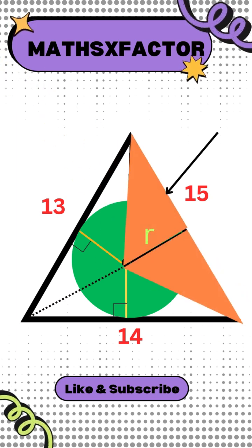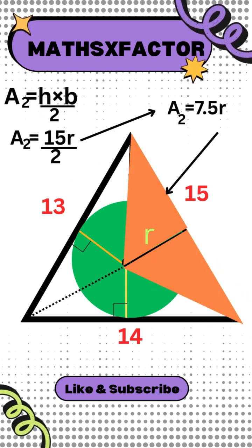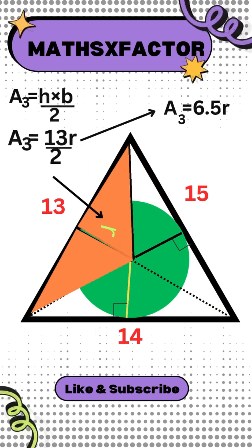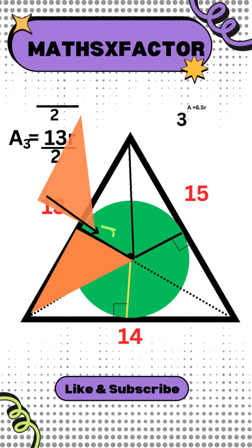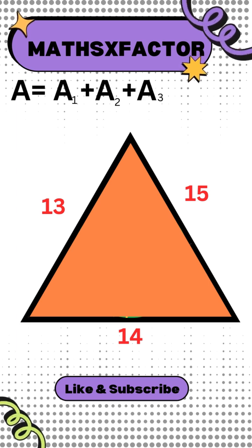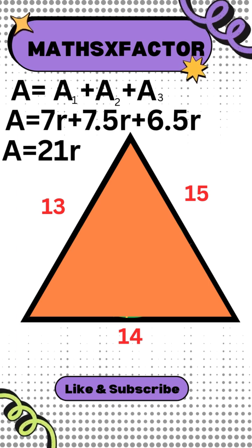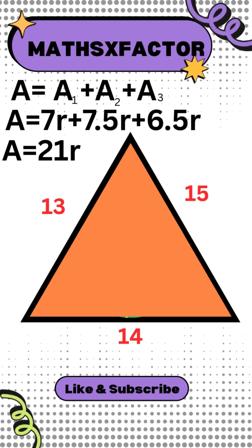That's good. Similarly we can find the area of this triangle also. And this one too. The area of the complete triangle is the sum of all three small triangles. By putting the values we get the area of the triangle which is 21 times R.